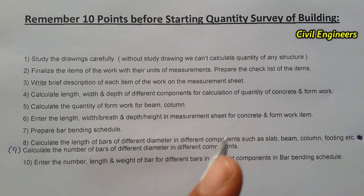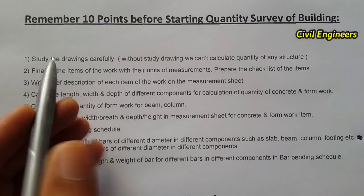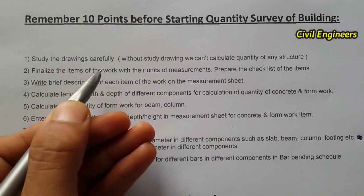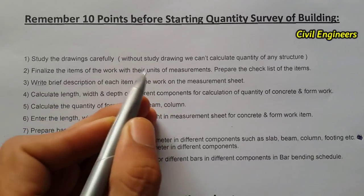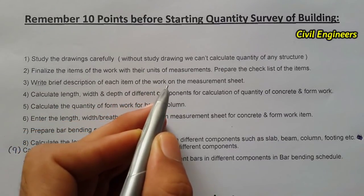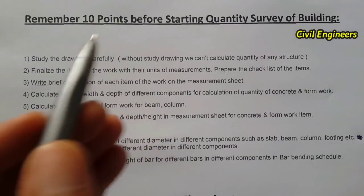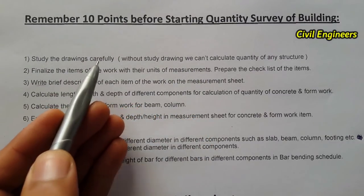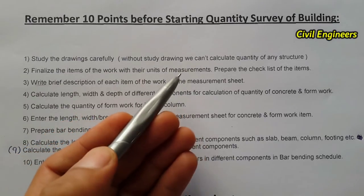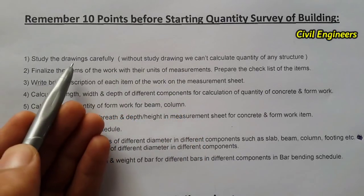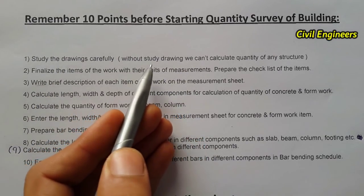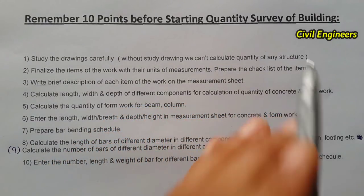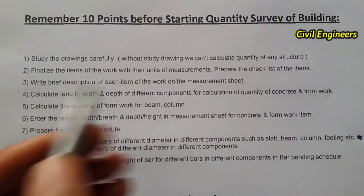The first point is to study the drawings carefully, because without the drawing we are not able to find the quantity of any structure in civil engineering. Remember that all the dimensions of any building are present in the drawing, and we can find the quantity of any object from its drawing sheet. Without studying the drawing, we cannot calculate the quantity of any structure.